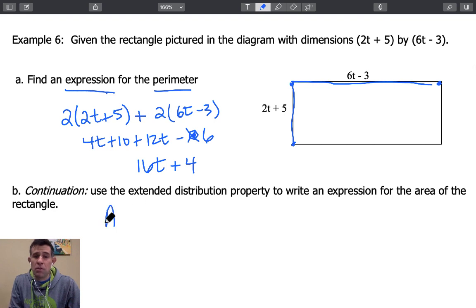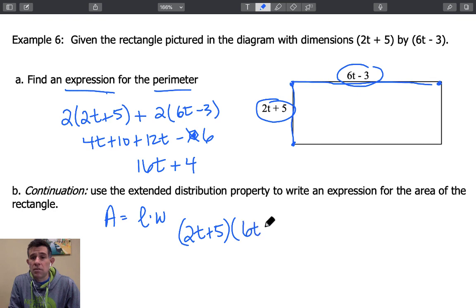Keep in mind the area formula for a rectangle is simply length times width or another way of saying that is base times height. So we're going to take the product of our dimensions here. So that will be 2t plus 5 times the product 6t minus 3. So you can either choose to use the box area method that we've been practicing in this lesson or you can use the extended distribution property. For this problem, I will use the extended distribution property. Why don't you pause the video and try one of these two methods on your own and check back in with the answer.